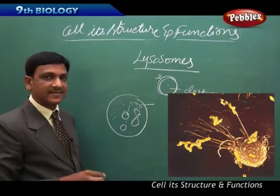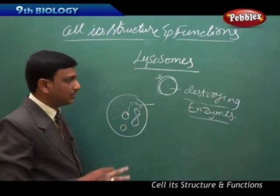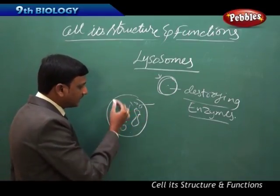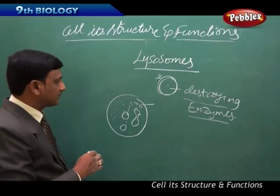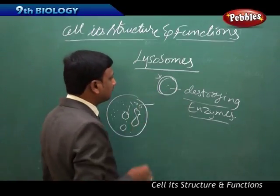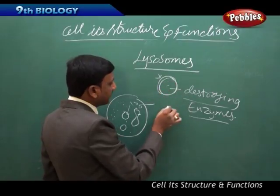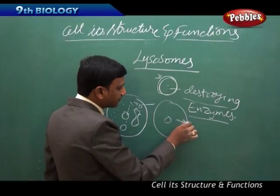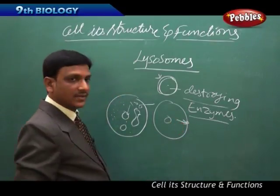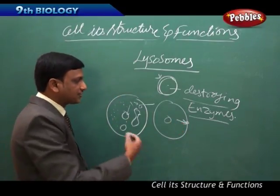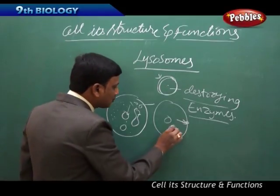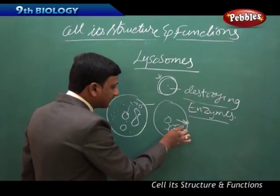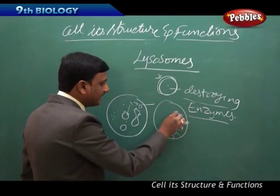The lysosome, even though it is carrying destroying enzymes, those are not directly coming in contact with the different parts of a cell, so nothing happens to the cell. These lysosomes carry the materials inside the cell and carry the materials out. Sometimes, when the cell wants to destroy itself, the lysosomes burst open and these toxic materials enter the cell and destroy it.